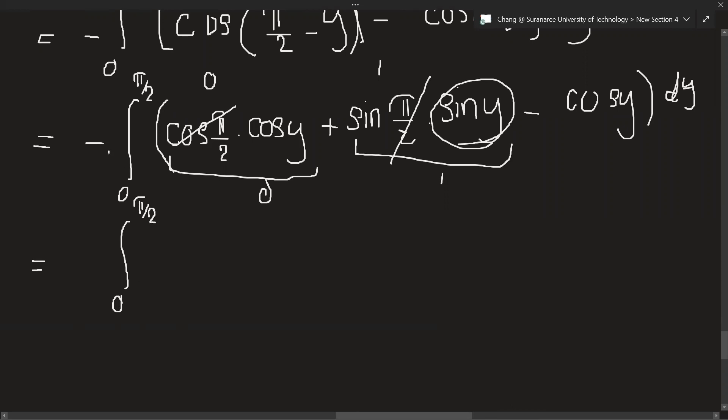So from 0 to pi over 2. All right, so let's multiply with minus. Minus times minus plus 1, so we will get plus 1, minus sin y. And we have to integrate with respect to y again.